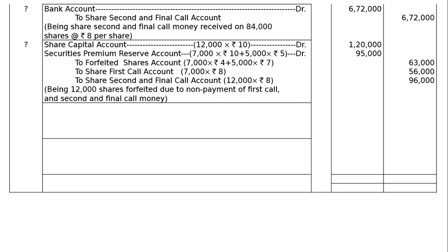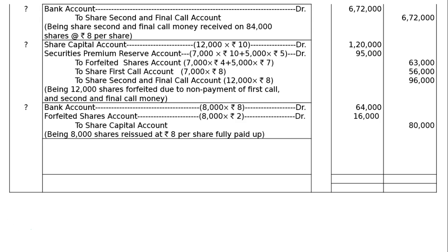Entry for reissue: Bank Account debited — 8,000 shares reissued at ₹8 = ₹64,000. Forfeited Shares Account debited — 8,000 shares at ₹2 = ₹16,000. To Share Capital Account: ₹80,000 (8,000 × ₹10). Being 8,000 shares reissued at ₹8 per share as fully paid.